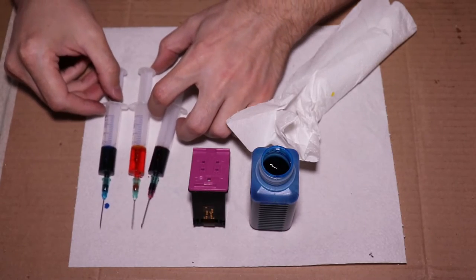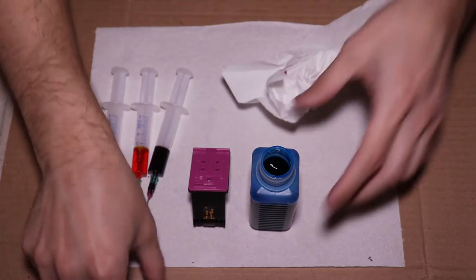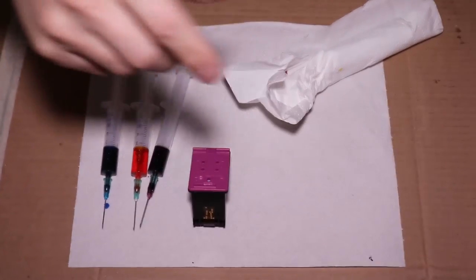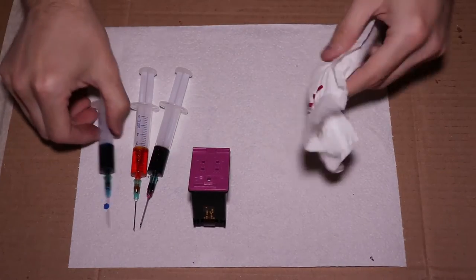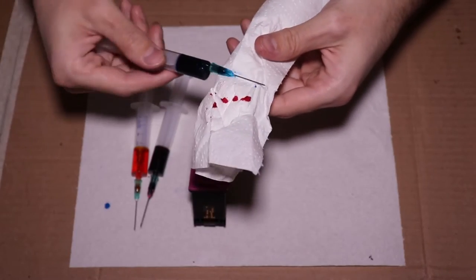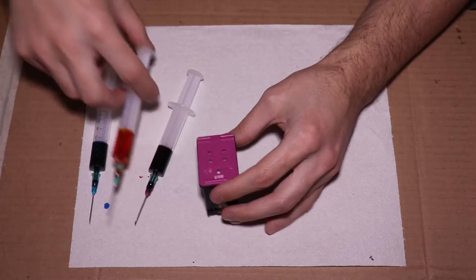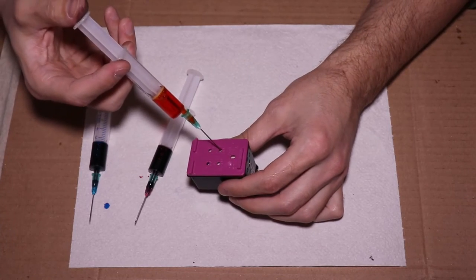So we have all of the inks now. The syringes are prepared. Let's put the cap back on. So the key with refilling this is not to stab the sponge directly but at an angle. I will actually do this color in real time so you can see how long it takes to do it.